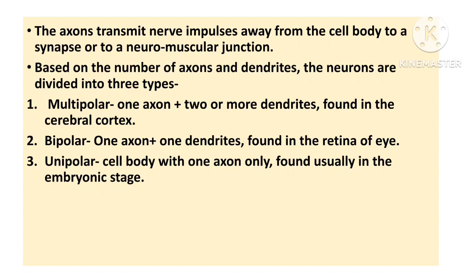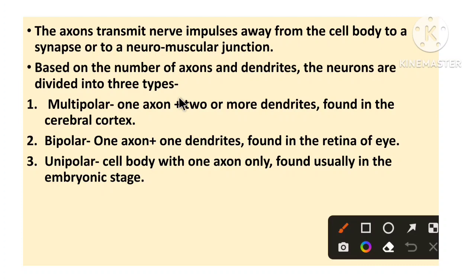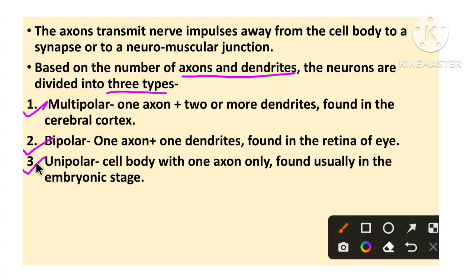Based on the number of axons and dendrites, neurons are divided into three types: multipolar, bipolar, and unipolar.